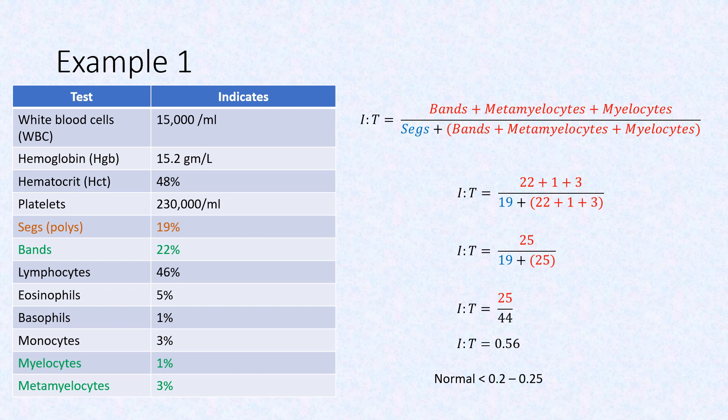Recall that a normal IT ratio is less than 0.2 to 0.25, so this indicates an infection.